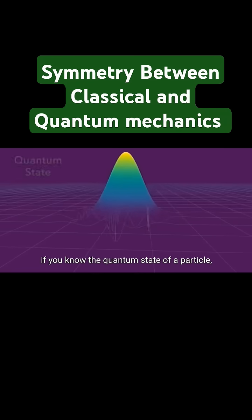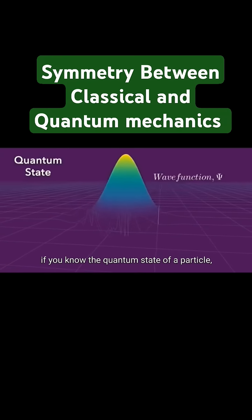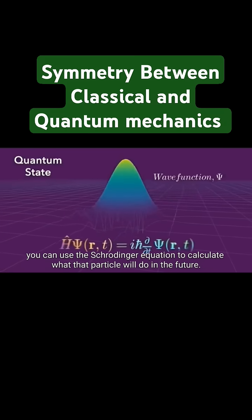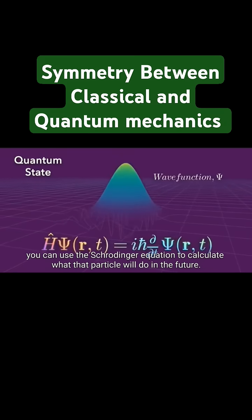In quantum mechanics, if you know the quantum state of a particle, that is its wave function, you can use the Schrodinger equation to calculate what that particle will do in the future.